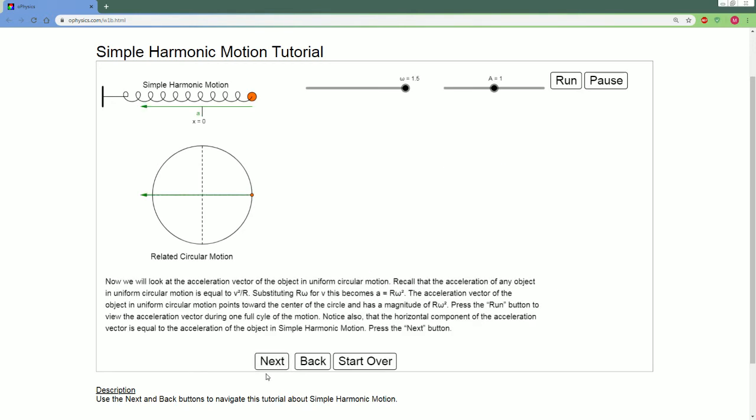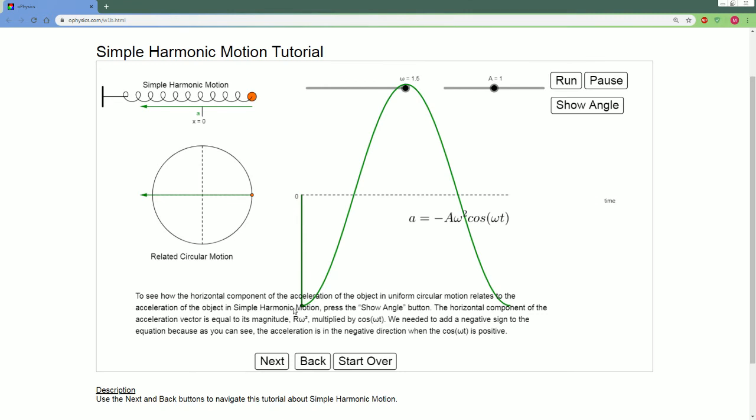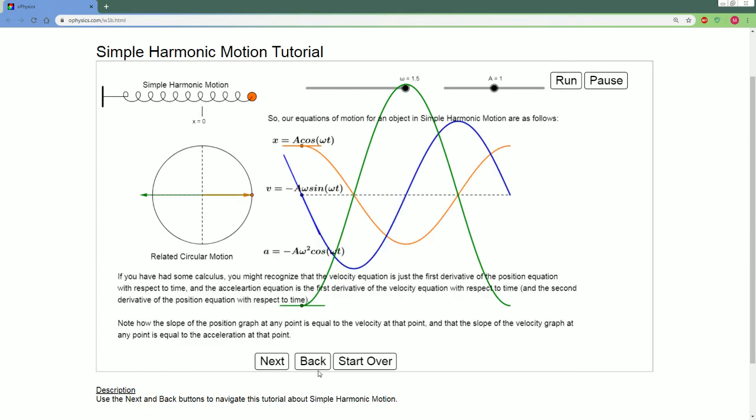Now, if you trace out the acceleration, it looks like this. Notice it's always pointing inwards. Why? Because of centripetal acceleration. To see the horizontal component of the acceleration of the object in uniform circular motion relates to the acceleration of the object in simple harmonic motion. And it's always pointing inwards.